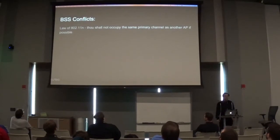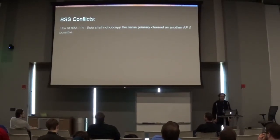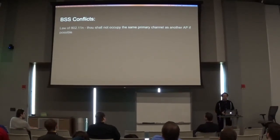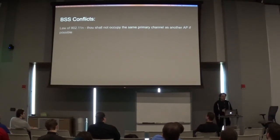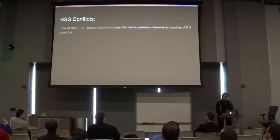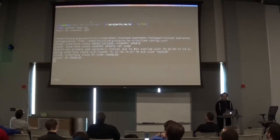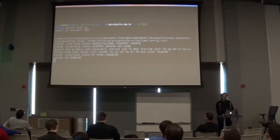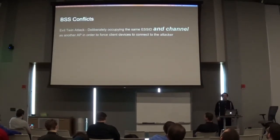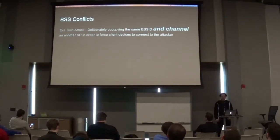There's a part of the RFC in 802.11n that states you are not allowed to occupy the same primary channel as another access point. If you detect another access point running on that primary channel, you have to go pick another one. Interesting thing though: this is not a legal requirement, it's an engineering requirement from the IEEE — the FCC doesn't care about this. The problem is that hostapd moved us automatically to a different channel, which is not what we wanted. This breaks the whole evil twin attack, because it's beneficial to occupy the same ESSID and channel as the target AP in order to force client devices to connect to you.